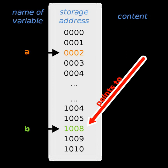In doubly linked lists or tree structures, a back pointer held on an element points back to the item referring to the current element. These are useful for navigation and manipulation, at the expense of greater memory use.